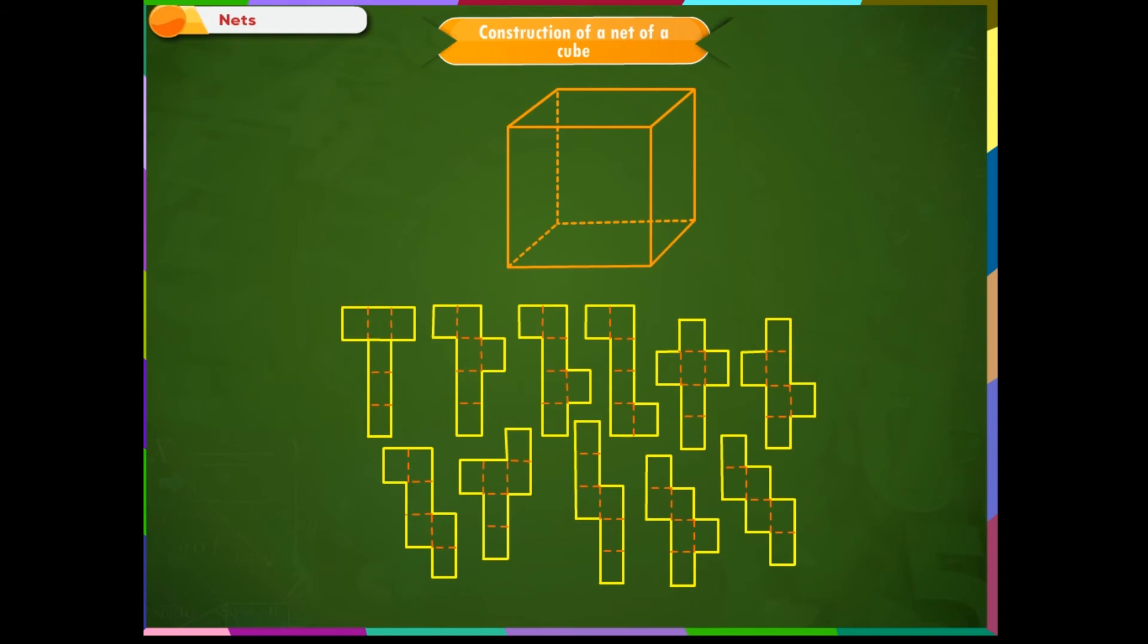One cube can have several net patterns. For the cube shown on the screen, these are the 11 possible nets. We need to visualize the folding and unfolding process mentally.